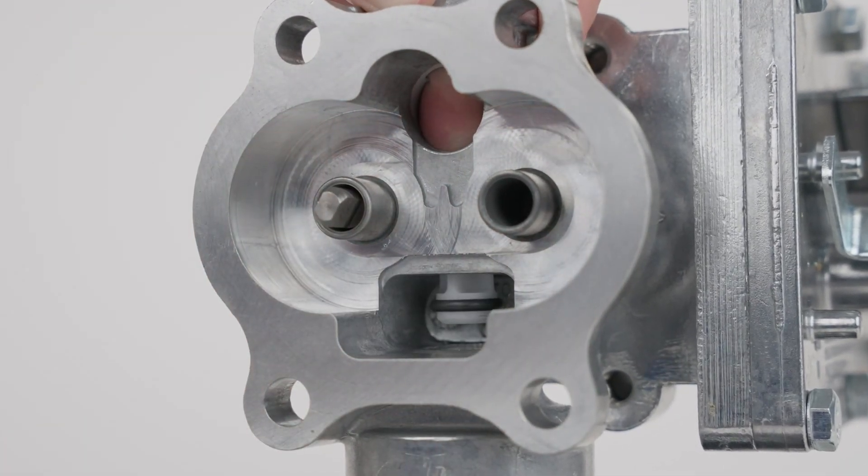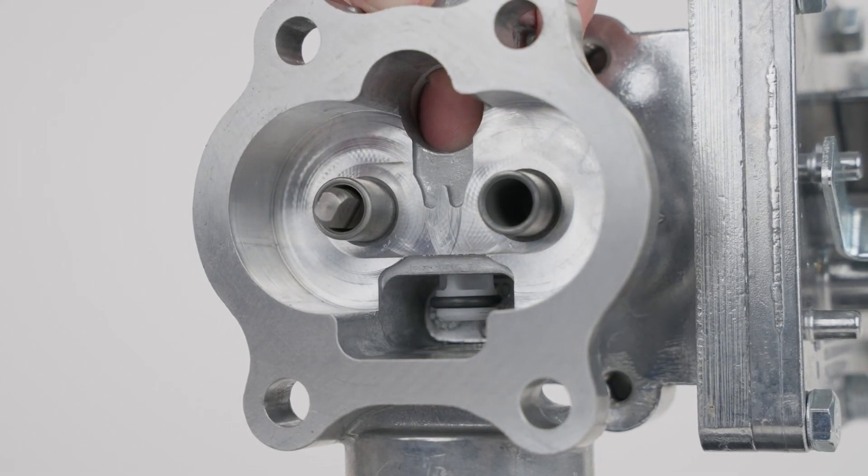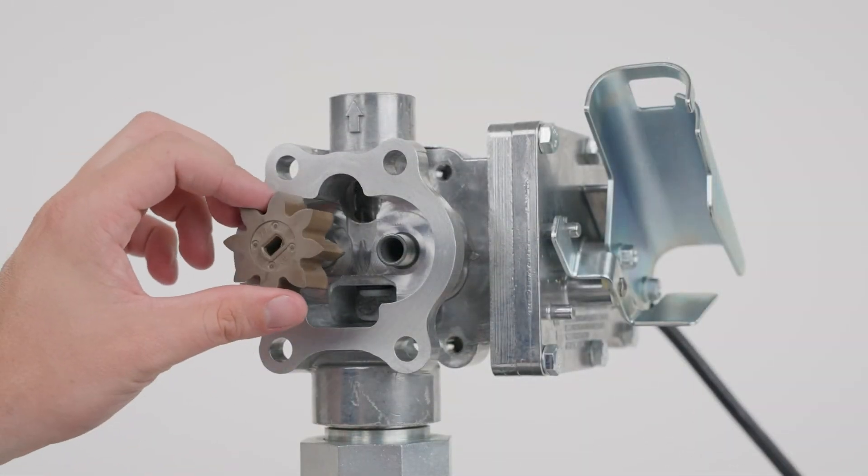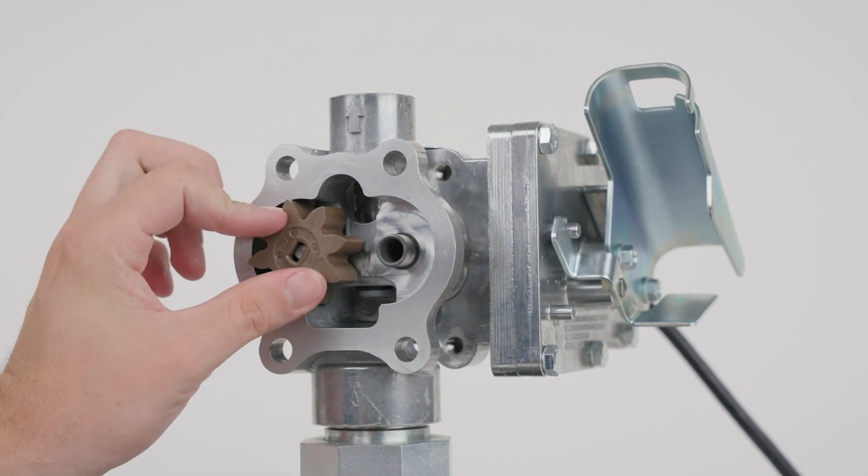Push on the poppet through the top outlet port to make sure it moves freely. Replace the gears and make sure they turn freely.